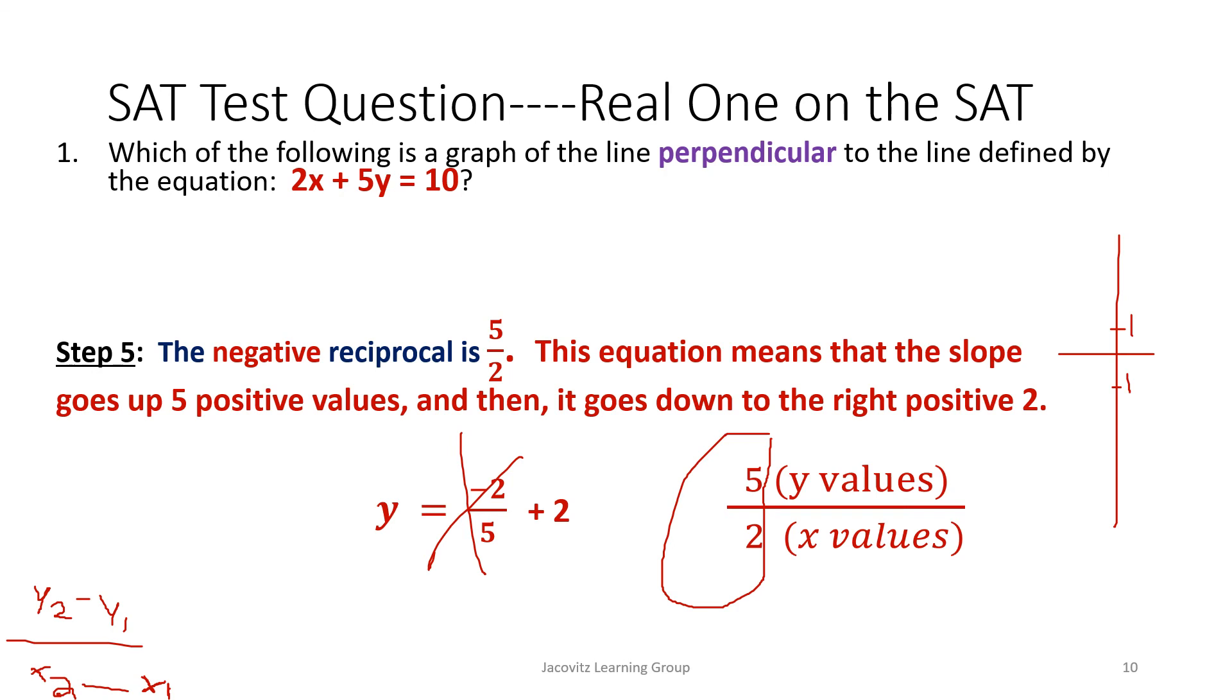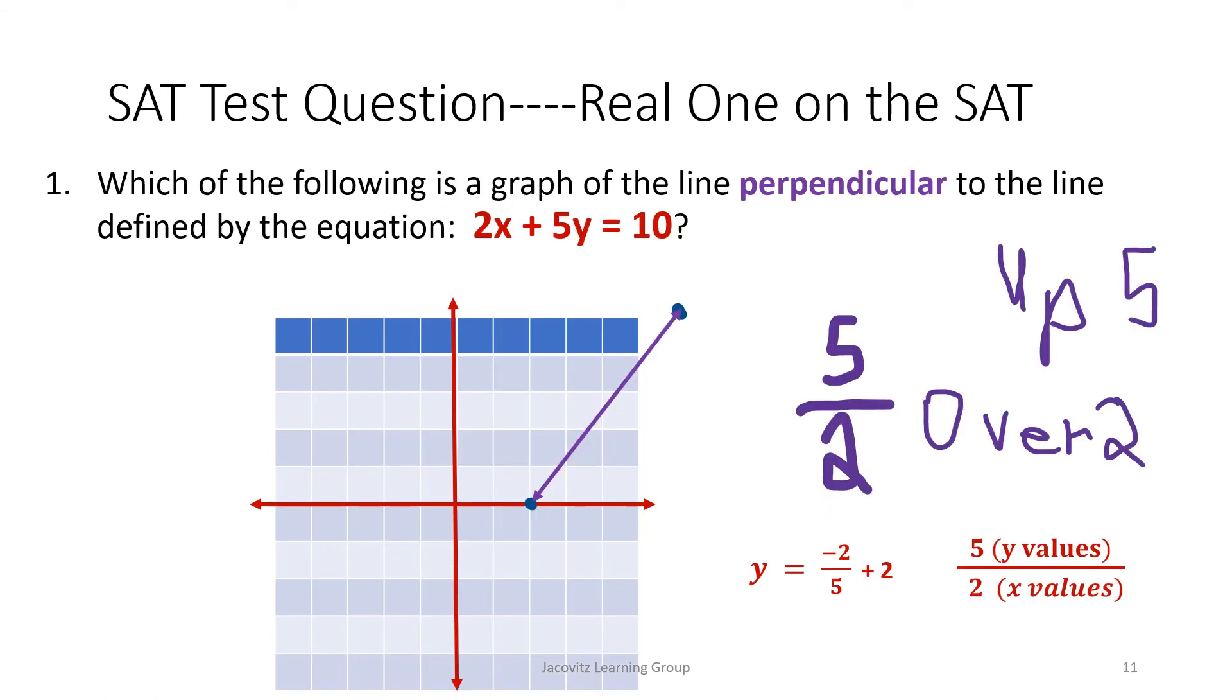The book actually showed that, and this would be your first point. A lot of people get confused and want to start here. The line is continuing—that's a continuous line. If you started here, you would still have to go up five points and go over two, but it wouldn't show you this.